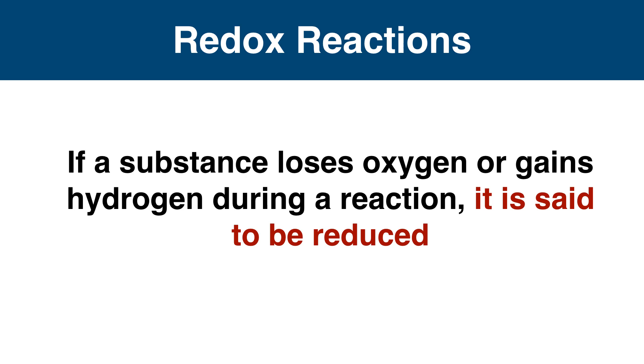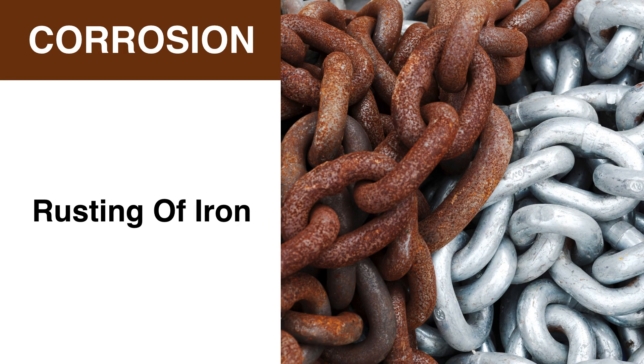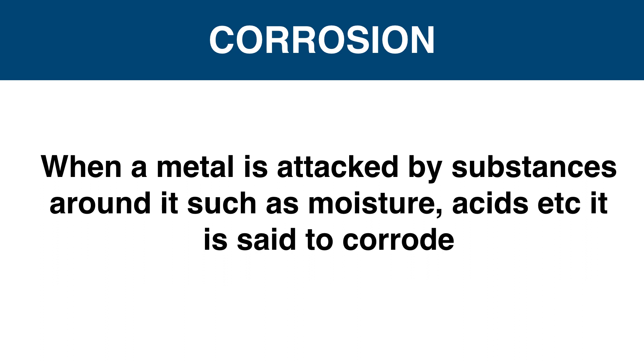In our life, there are some effects of oxidation reactions. One of them is corrosion. New iron materials are shiny, but they get coated with a brown powder through continuous air contact. This is rusting of iron. Like this, some substances attack metals and change their appearance. When a metal is attacked by substances around it such as moisture or acids, it is said to corrode, and the process is corrosion.